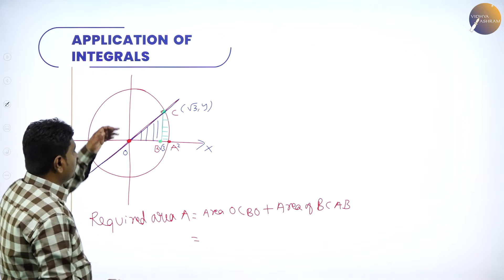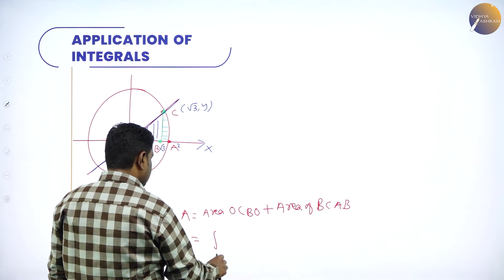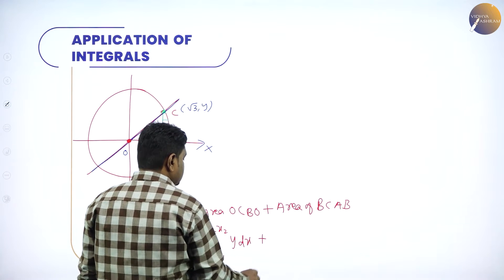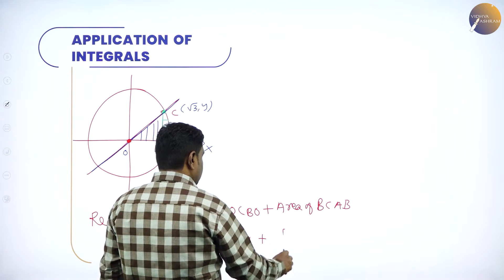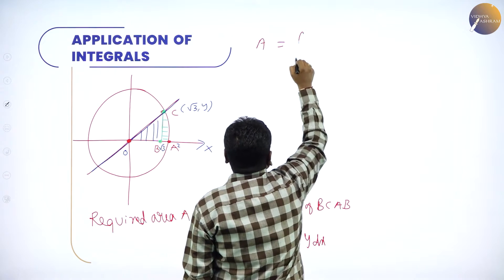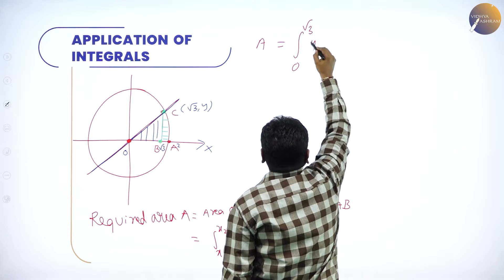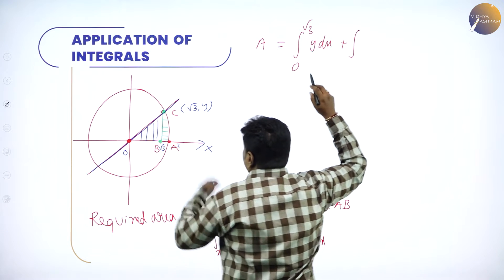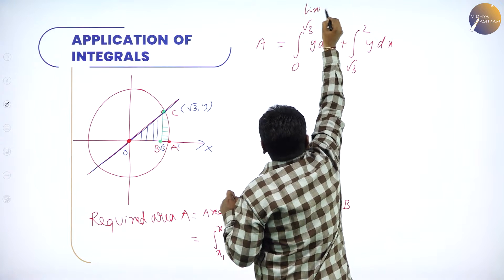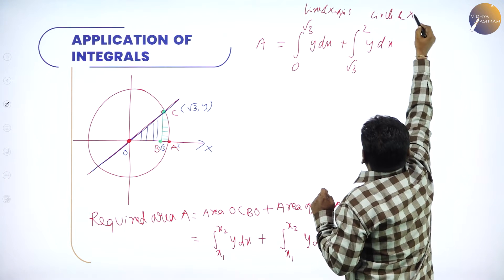Area of OC to OB means area bounded by the line and x-axis, which is the integral from x₁ to x₂ of y dx. The area bounded by the circle and x-axis is also an integral of y dx. For the first part, x goes from 0 to √3. For the second part, x goes from √3 to 2 — this is the circle and x-axis portion.